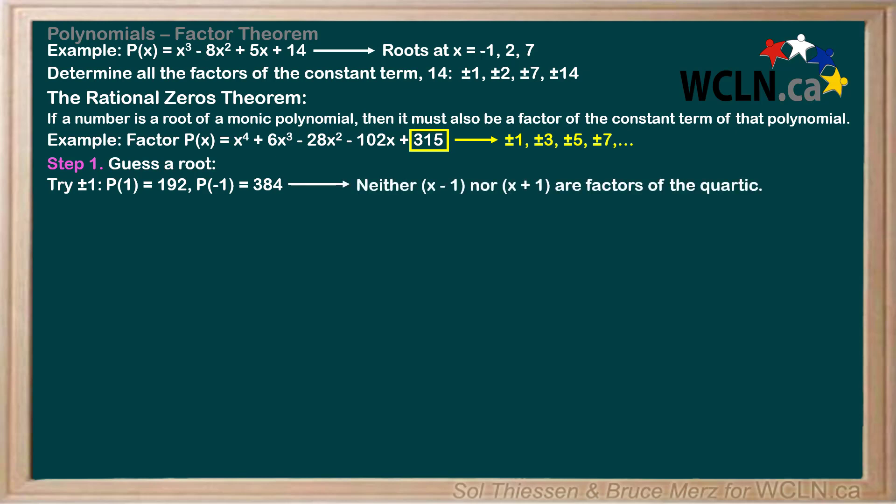Since neither 1 nor negative 1 cause the function to evaluate to 0, neither x minus 1 nor x plus 1 are factors of the quartic. Moving up the number line, might as well try 2 and negative 2 now, right? Actually, no. The constant term of our function is 315, which is an odd number. This means 2 is not a factor of the constant term, and therefore, by the rational zero theorem, neither positive nor negative 2 can be a root of our polynomial.